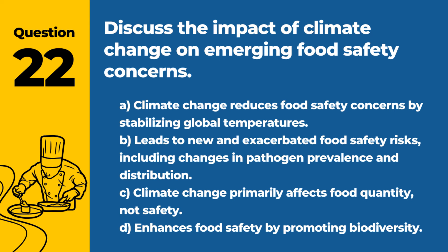Question 22. Discuss the impact of climate change on emerging food safety concerns. a. Climate change reduces food safety concerns by stabilizing global temperatures. b. Leads to new and exacerbated food safety risks, including changes in pathogen prevalence and distribution. c. Climate change primarily affects food quantity, not safety. d. Enhances food safety by promoting biodiversity. Answer: b. Leads to new and exacerbated food safety risks, including changes in pathogen prevalence and distribution. Climate change poses significant challenges to food safety through environmental alterations.